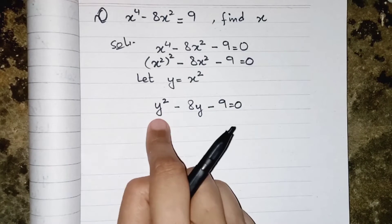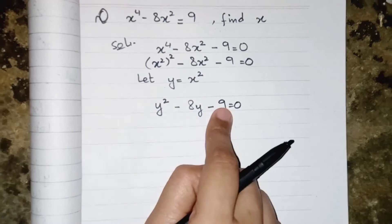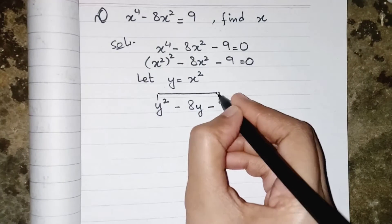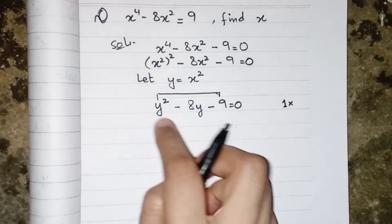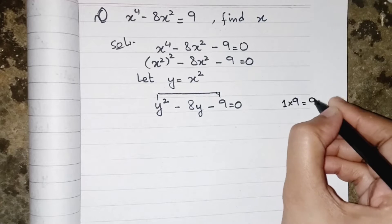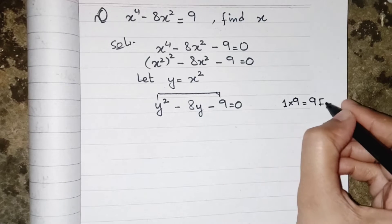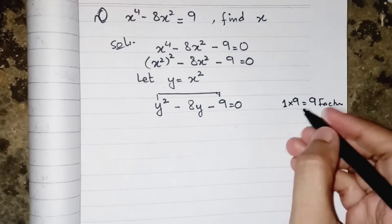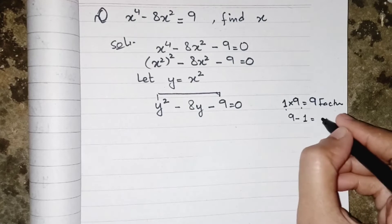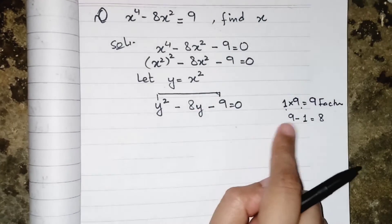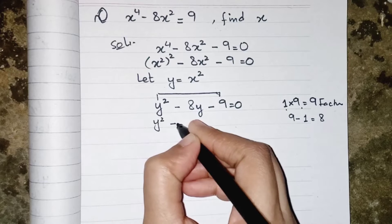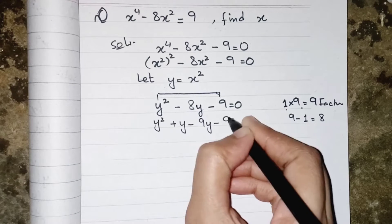Now we have to find the value of y using the factorization method. To apply factorization, we multiply the coefficients of the first and last terms: 1 multiplied by 9 equals 9. We need factors of 9 that give us the middle term. The factors are 1 and 9, and 9 minus 1 equals 8, so we write y² plus y minus 9y minus 9 equals 0.